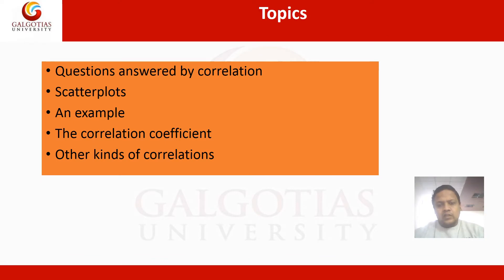We will cover the following topics in this video lecture: first, the question answered by correlation — what type of questions arise when we talk about correlation and what are the answers. Then the scatter plot, which is the graphical method to represent correlation between two variables. Then the correlation coefficient — the Karl Pearson coefficient of correlation, represented by small r. Then other kinds of correlation, and finally the factors affecting correlation.